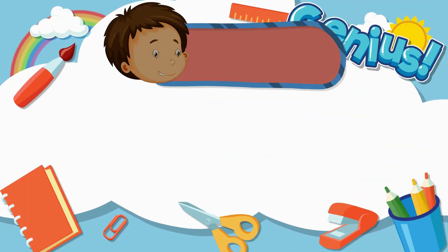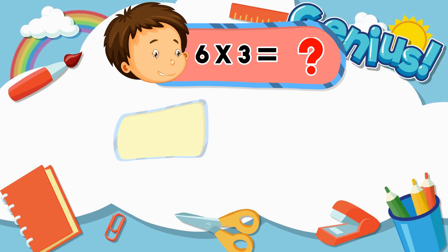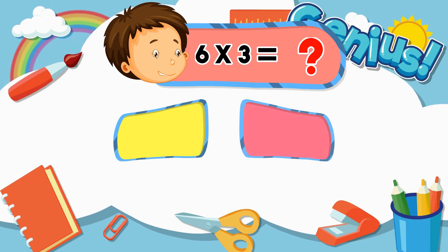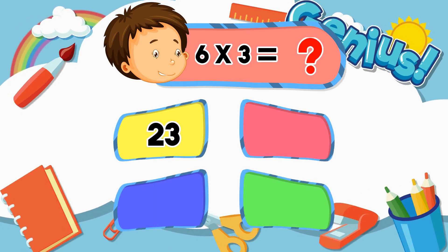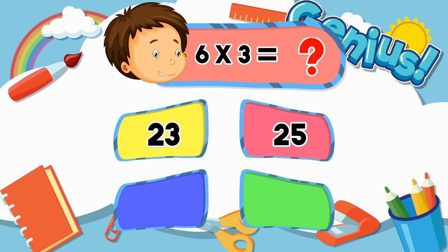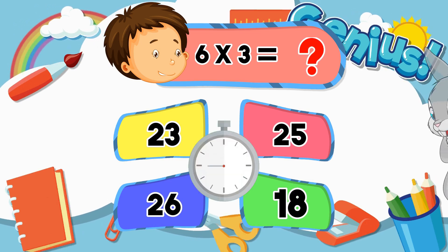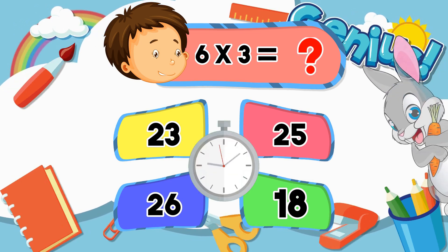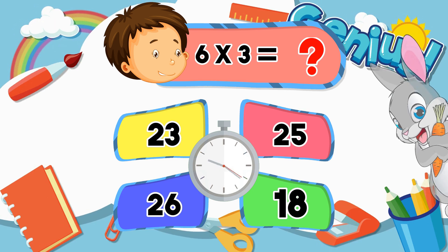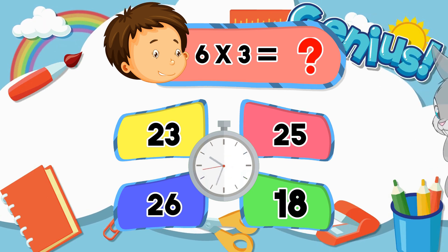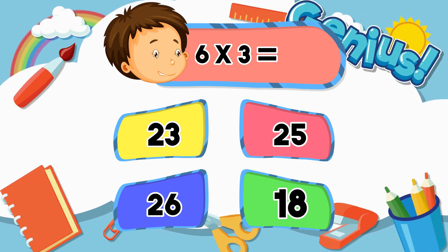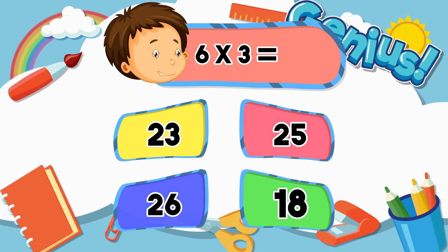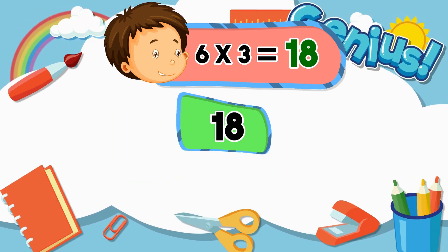What is six times three? Twenty-three, twenty-five, eighteen. Eighteen.